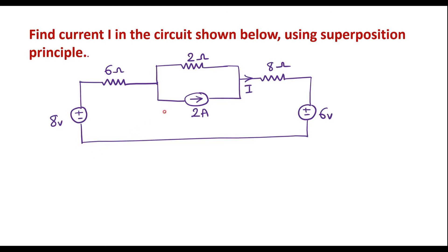In this video, I will consider one numerical on superposition theorem. Find current I in the circuit shown below using superposition principle. This is the given circuit. Here we can see that the current I is flowing in the 8 ohm resistor. We are supposed to calculate this I using superposition principle or superposition theorem.